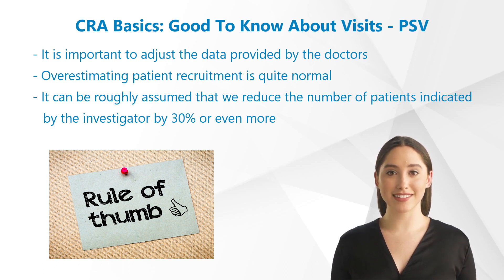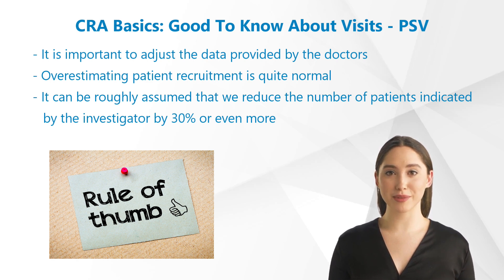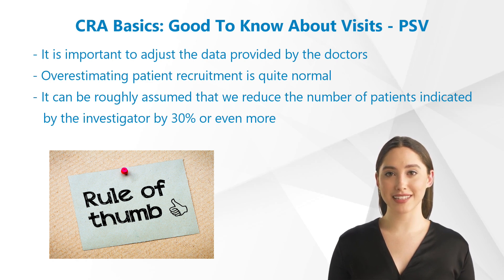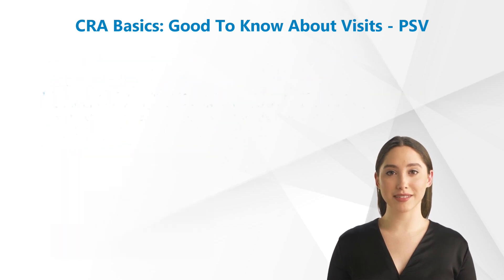As a rule of thumb, it can be roughly assumed that we reduce the number of patients indicated by the investigator by 30%. For some medications, the correction factor can be up to 50%. This is the only way to ensure that realistic figures are determined.